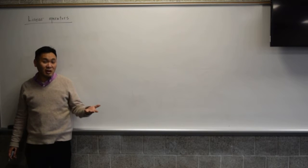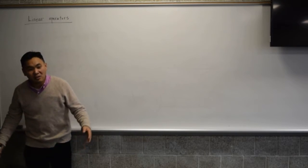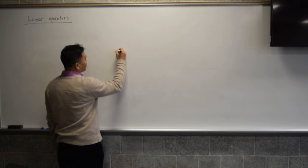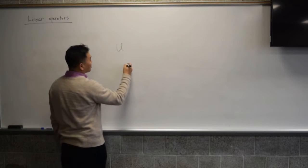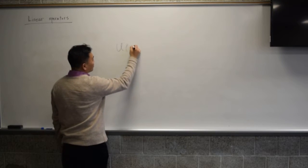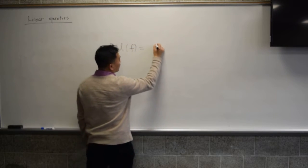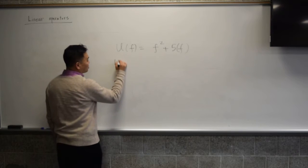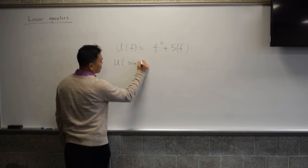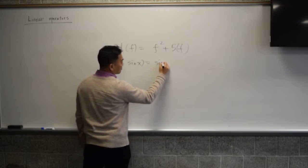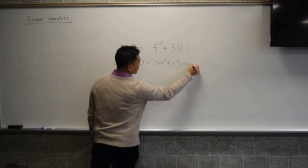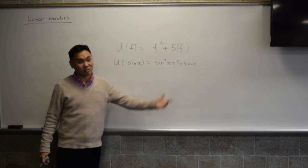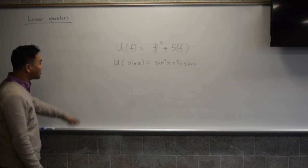Integration is another operator. Or you can make a totally made-up operator — usually people use something like a capital letter. Let's say U of f equals f squared plus 5x or something like this. Then U of sine(x) gives sine²(x) plus 5·sin(x). So that's an operator — it takes in a function and gives you back a function.